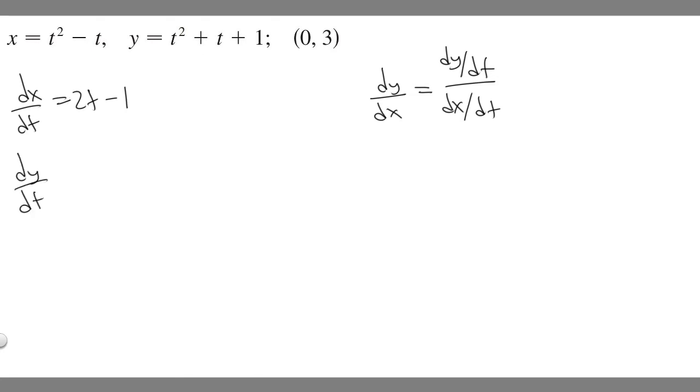Let's do dy/dt now. Derivative of t² is 2t. Derivative of t is just 1, and the derivative of 1 is just 0. So it's just going to be 2t + 1.